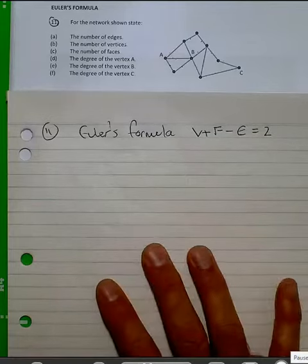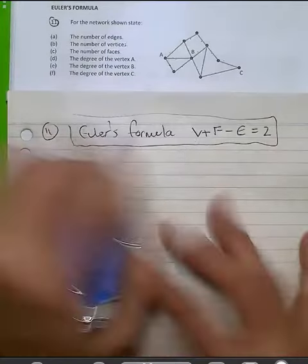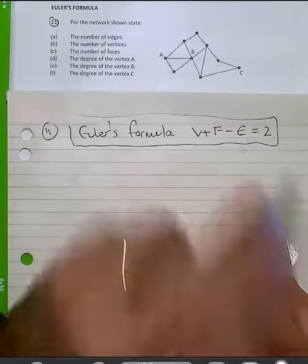We're now going to look at Euler's formula. Euler's formula basically says the sum of the vertices and the faces subtract from the edges, you always get two.